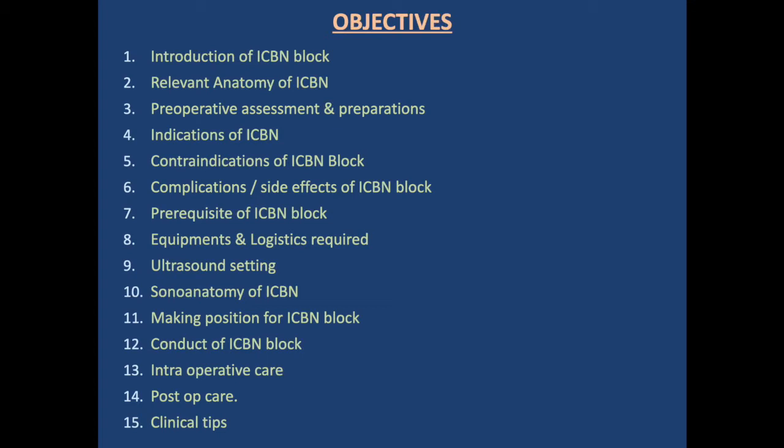Further objectives include: contraindication of intercostal brachial nerve block, complications and side effects, prerequisite of the block, equipment and logistics required, ultrasound setting, sonographic anatomy, positioning for the block, conduct of the block, intraoperative care, postoperative care, and clinical tips.